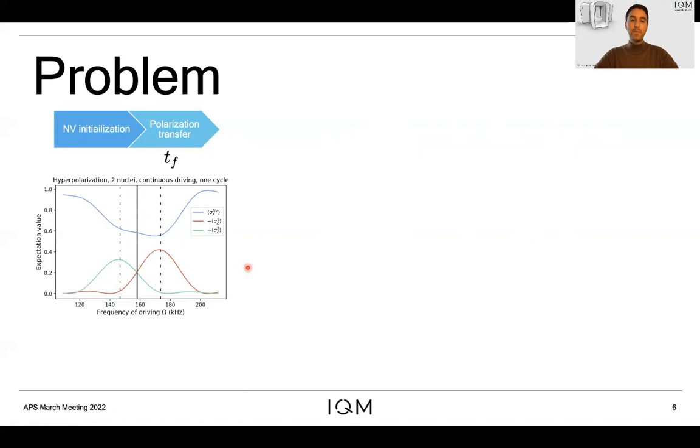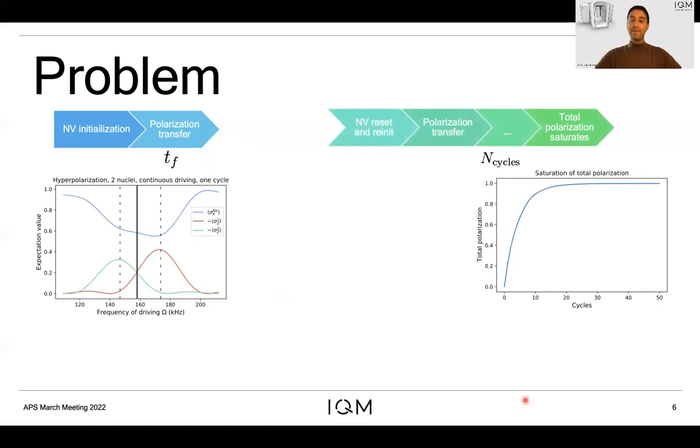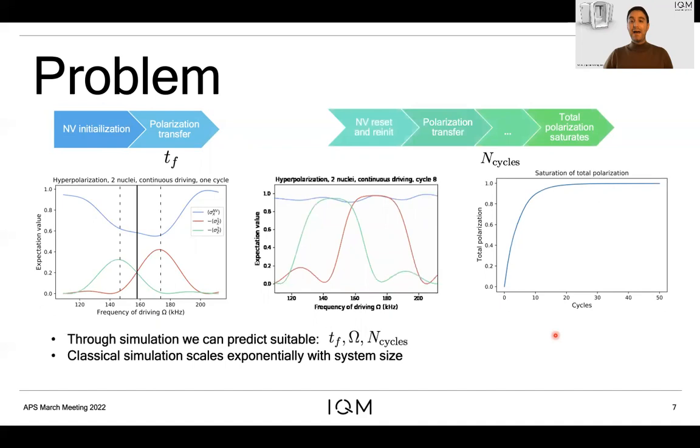It is possible to continue hyperpolarizing the system by reinitializing the state of the NV and repeating the process. After several cycles, the total polarization of the system will saturate to its maximum value. Then simulations such as this allow to predict not only good frequency values but also good running times with interaction times tf and an appropriate number of cycles to reach a certain polarization level.